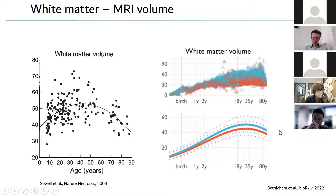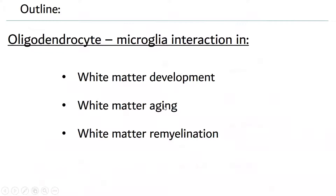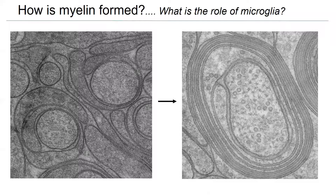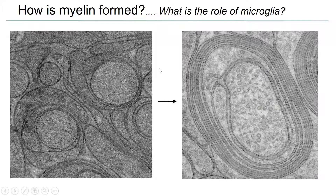Today I will talk about oligodendrocyte and microglial interactions, starting with white matter development, then moving to aging and remyelination. One long-standing question in our lab is how myelin is formed. I will mention just one aspect of this: the role of microglia in the process. To study myelination we often use electron microscopy.